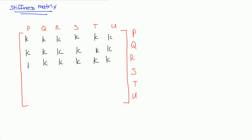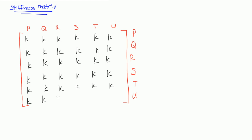There's a certain way we read matrices. If we want to find a certain spot in a matrix, we always read row first and then column. You can probably skip past this part if you know what's going on.